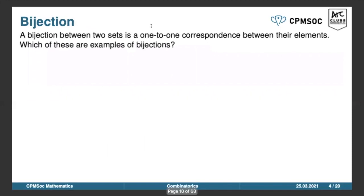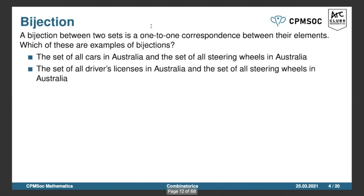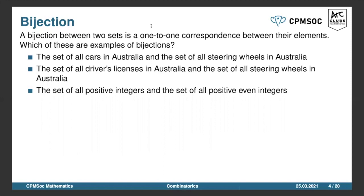Another useful technique for counting is reducing the size of a set to another set whose size you already know. Every car in Australia has a steering wheel, and every steering wheel is attached to a car — that's an example of a bijection. A bijection is a mapping between two sets where no element from set A is paired with multiple elements from set B, and no element from set B is paired with multiple elements from set A.